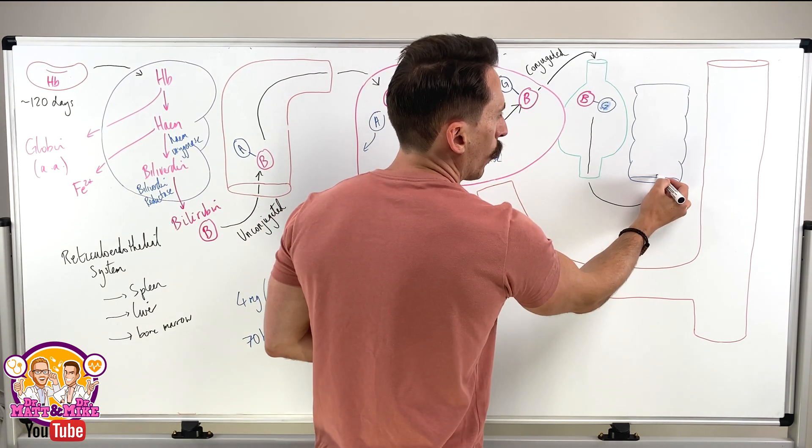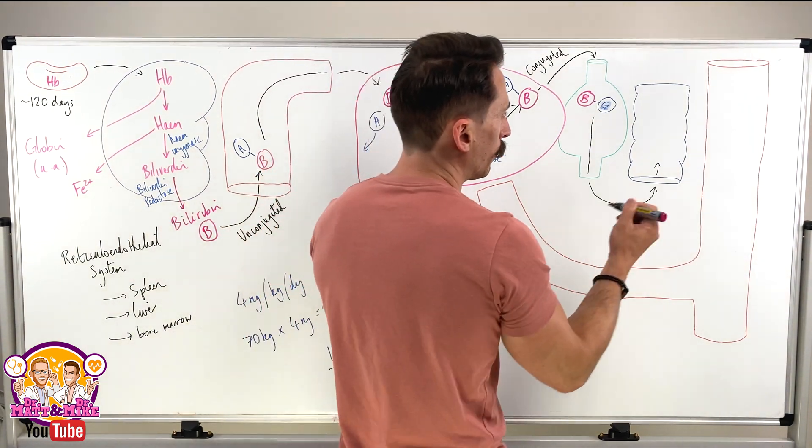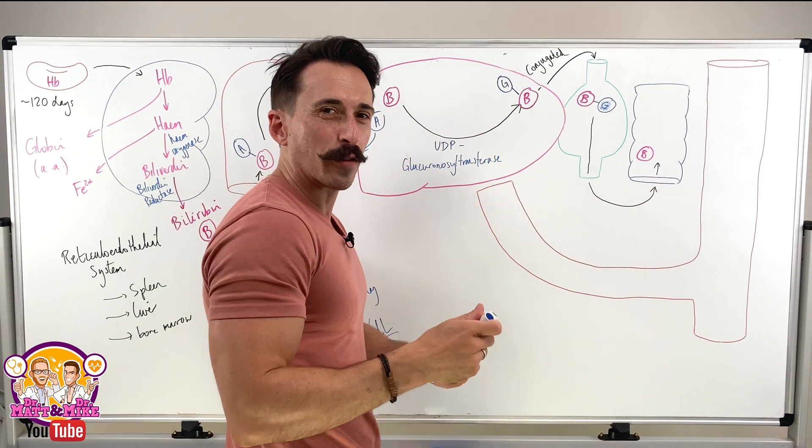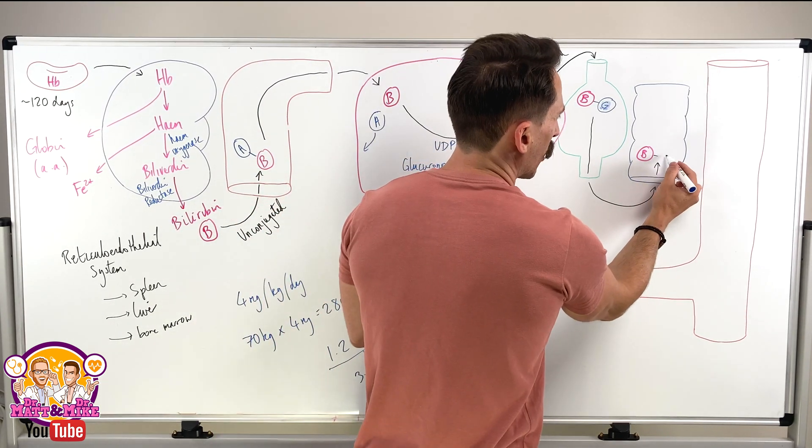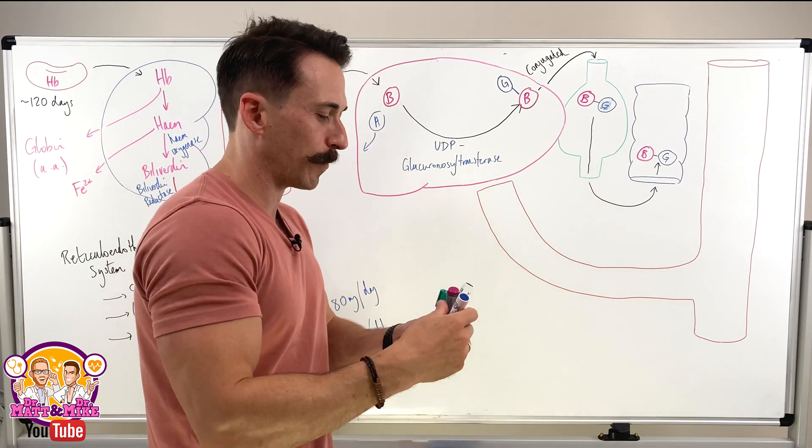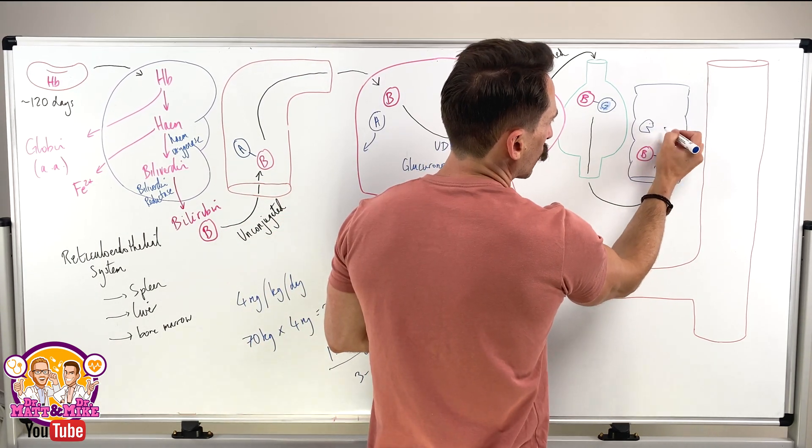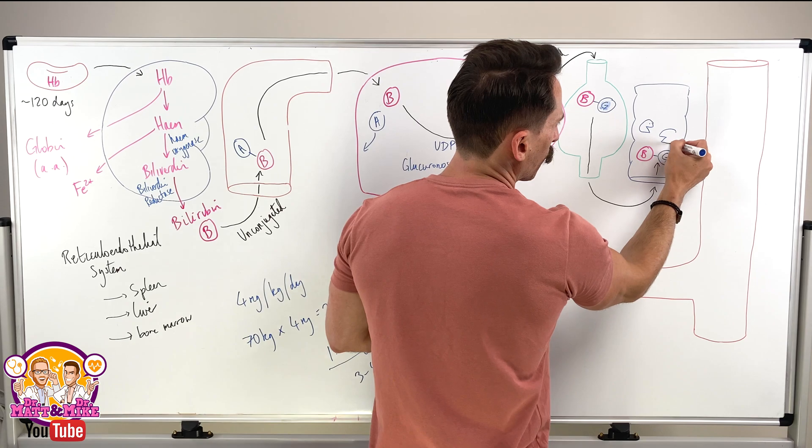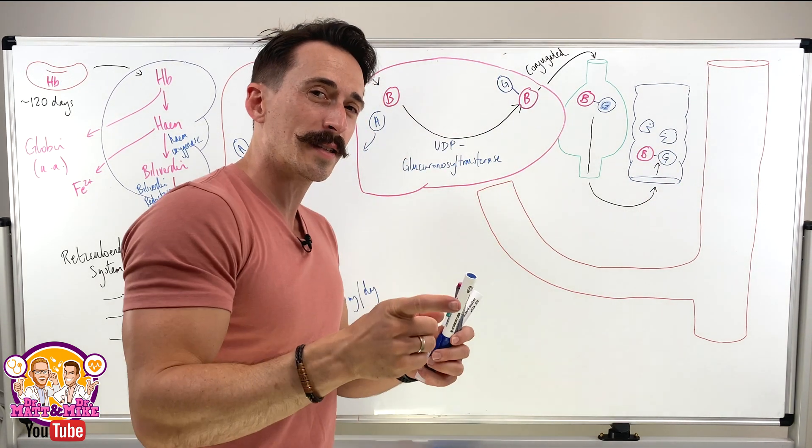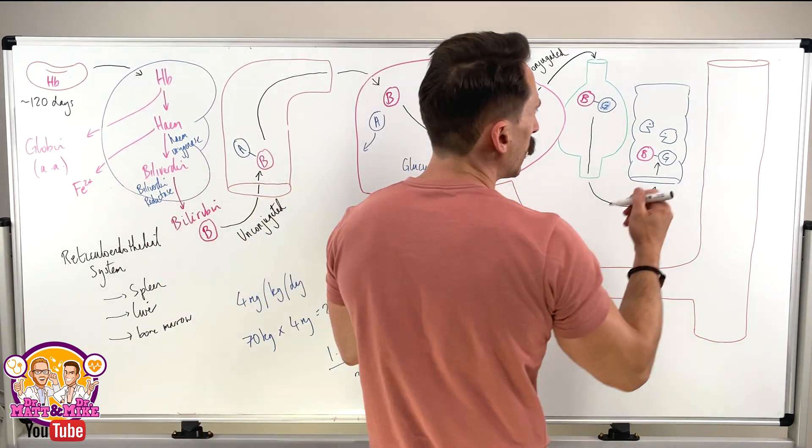And at some point, this conjugated bilirubin is going to come across gut bacteria, the gut flora. What does this gut flora do? It likes to gobble it up and it metabolizes it even further. So we're going to have this gut bacteria now gobbling it up. And it metabolizes it further, turns it into something called urobilinogen.